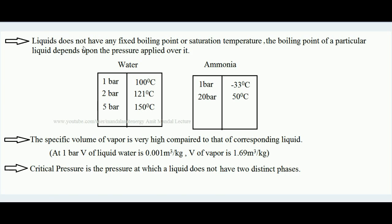The first thing is that liquids do not have any fixed boiling point. The boiling point of a particular liquid depends upon the pressure applied over it. For example, if I ask you the boiling point of water, your answer might be 100 degrees centigrade, but 100 degrees centigrade is the boiling point of water only when the pressure applied is one bar. If we change the pressure, the boiling point also changes.